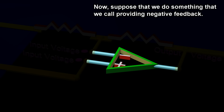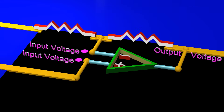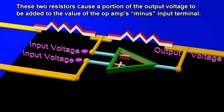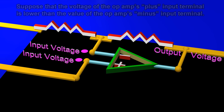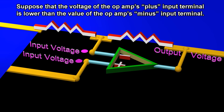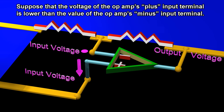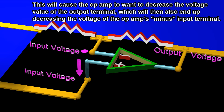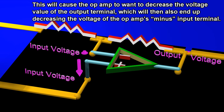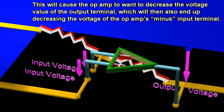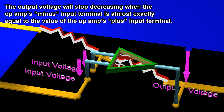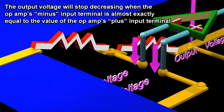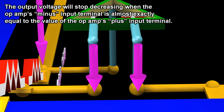Now, suppose we do something that we call providing negative feedback. These two resistors cause a portion of the output voltage to be added to the value of the op-amp's minus input terminal. Suppose that the voltage of the op-amp's plus input terminal is lower than the value of the op-amp's minus input terminal. This will cause the op-amp to want to decrease the voltage value of the output terminal, which will then also end up decreasing the voltage of the op-amp's minus input terminal. The output voltage will stop decreasing when the op-amp's minus input terminal is almost exactly equal to the value of the op-amp's plus input terminal.